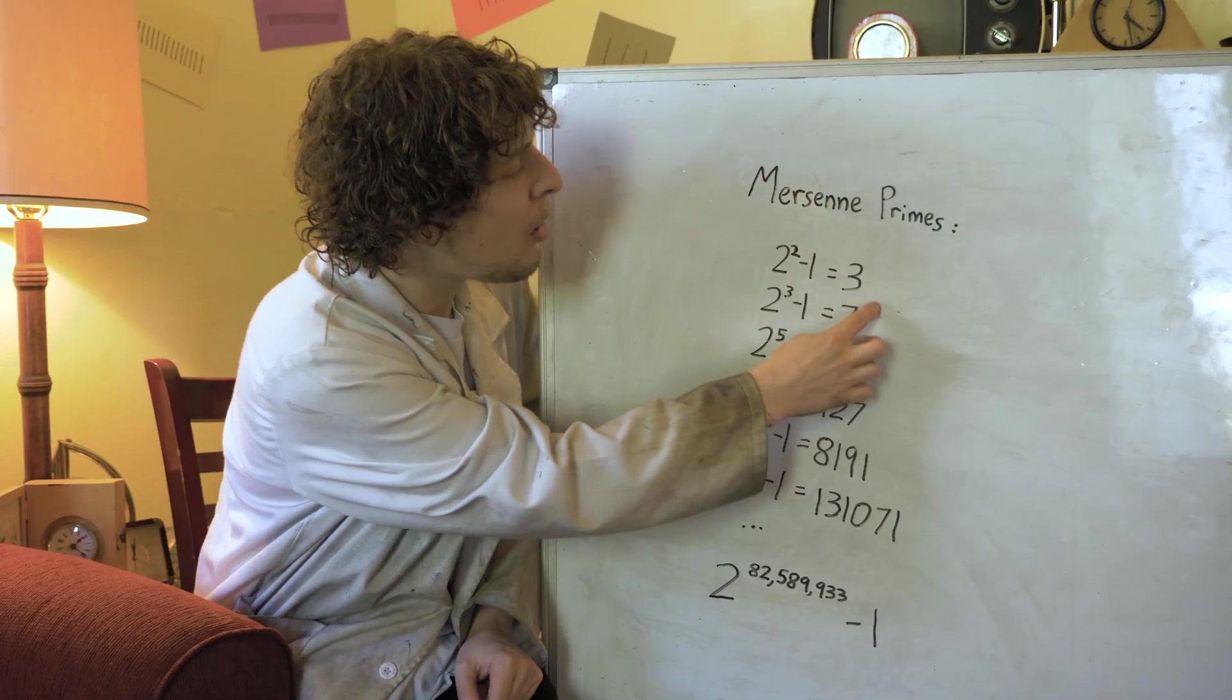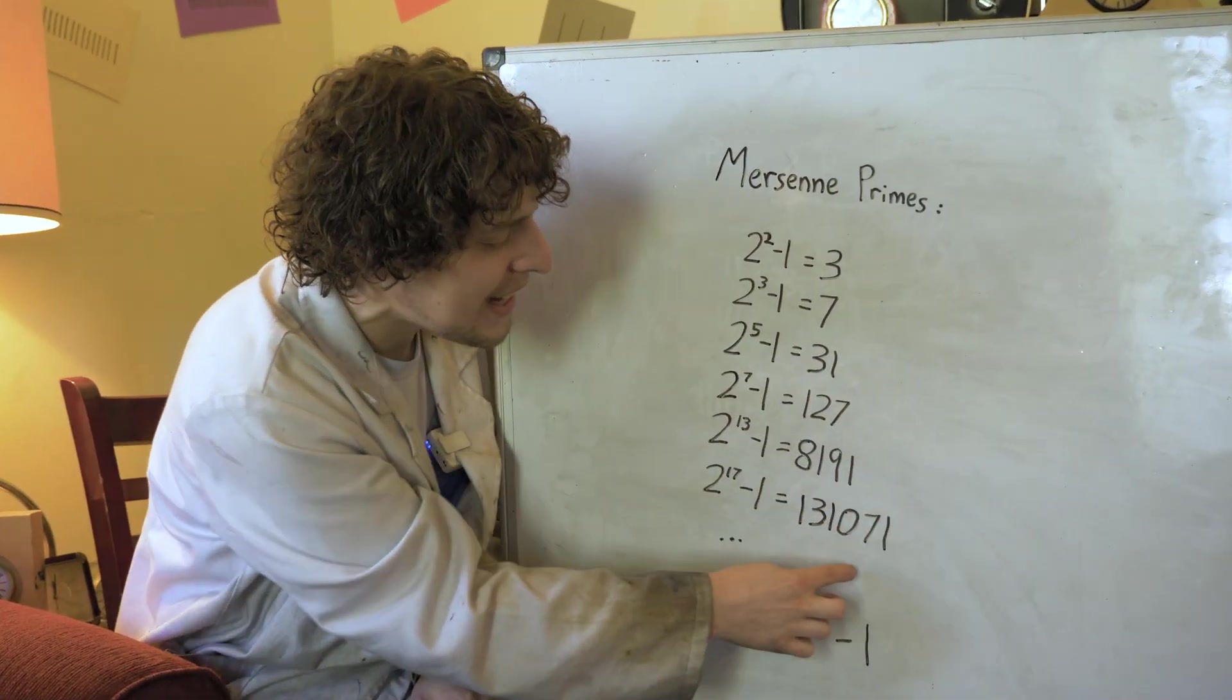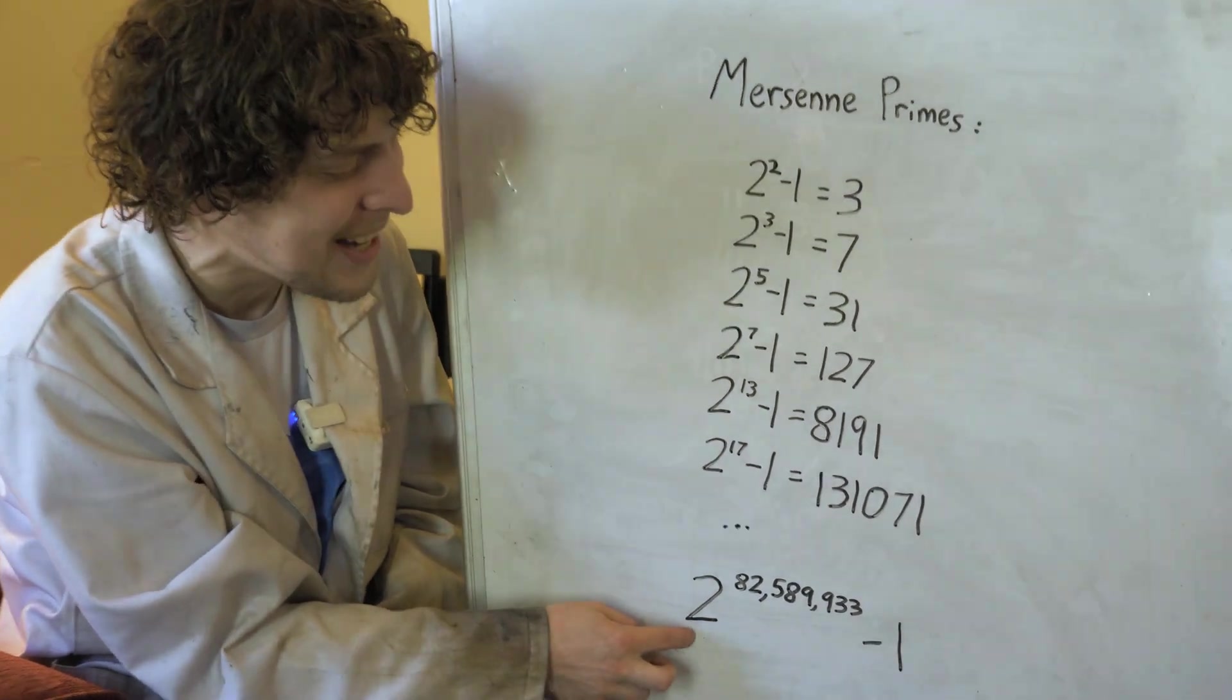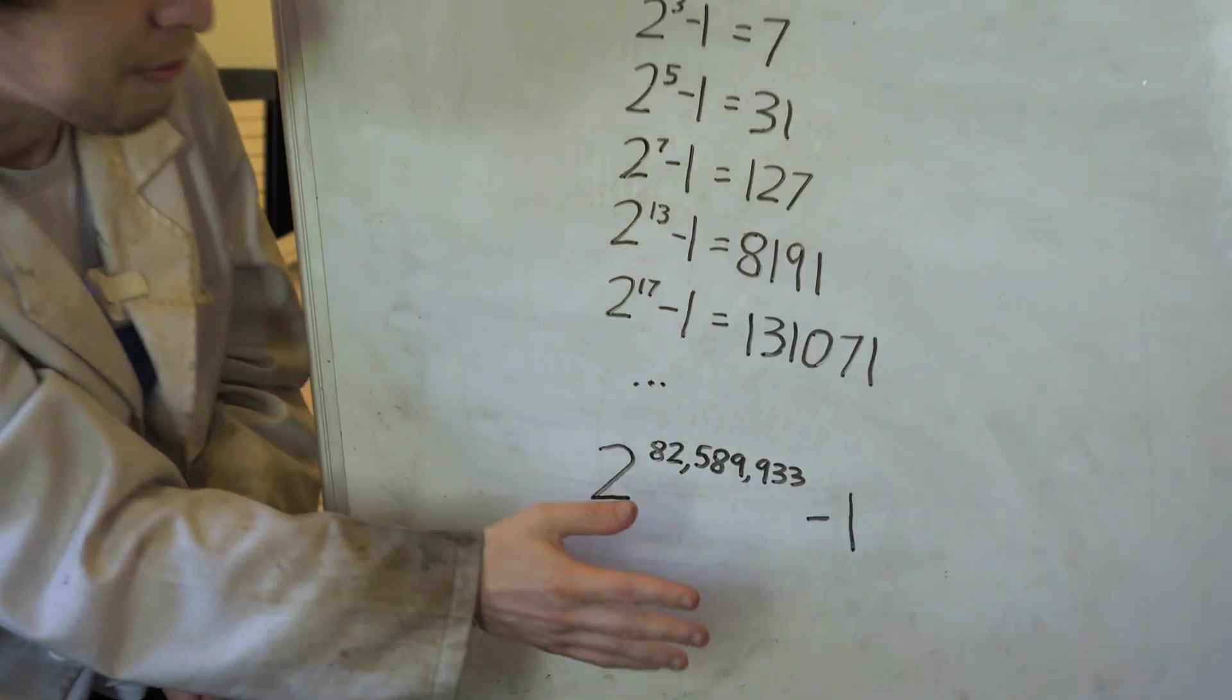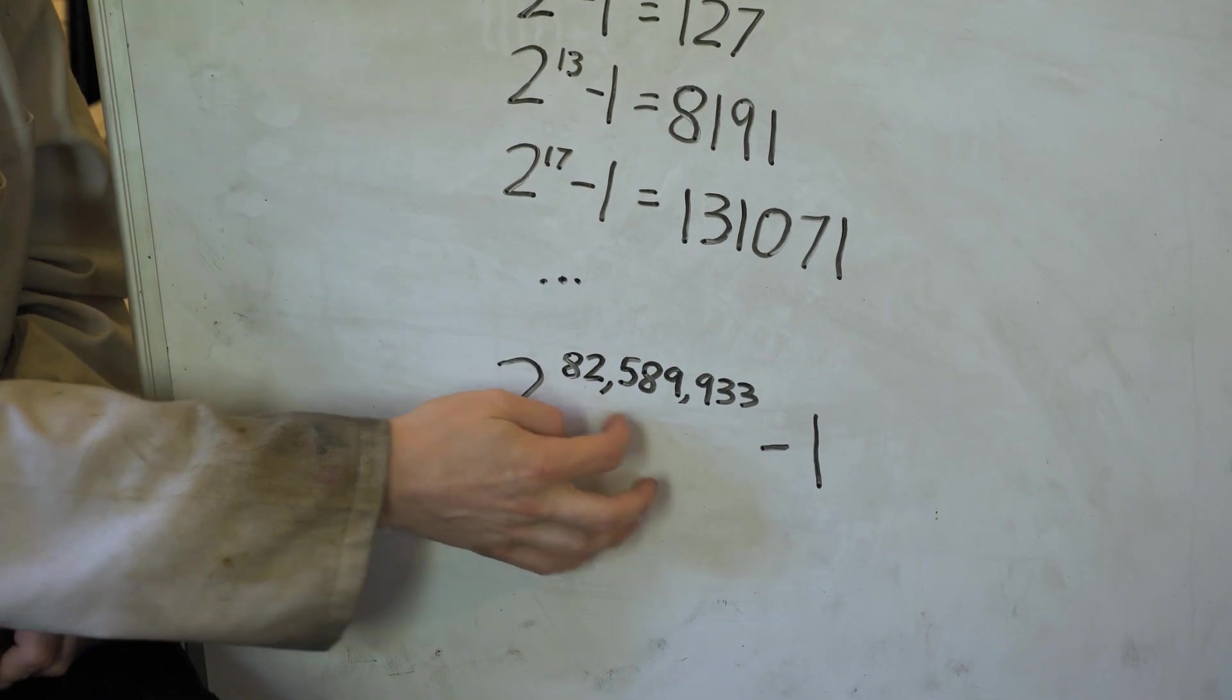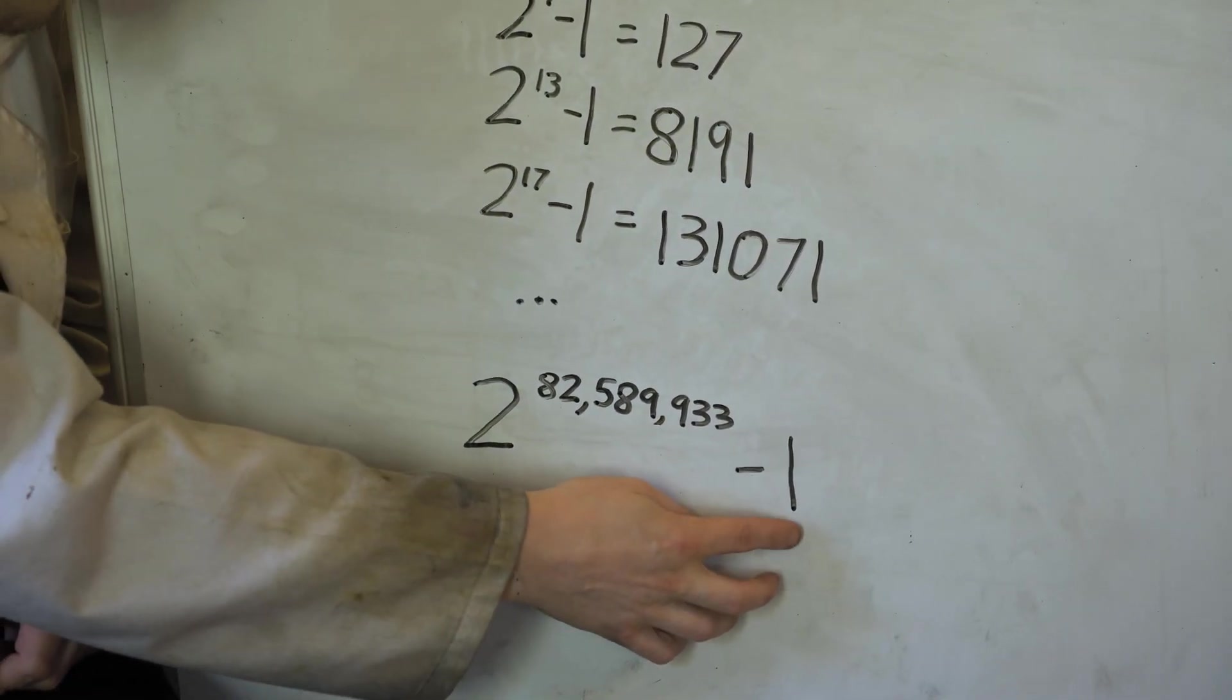So here's the smallest mersenne primes, and then I skipped some up to the biggest one currently discovered. 2 to the power of 80 something million minus 1.